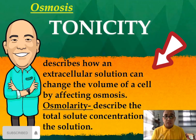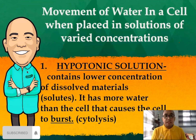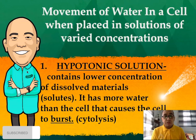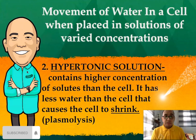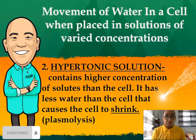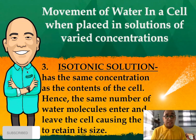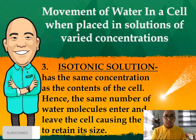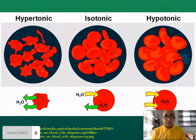Tonicity describes how an extracellular solution can change the volume of cells by affecting osmosis. Osmolarity describes the total solute concentration in a solution. Movement of water in solutions of varied concentrations is of three kinds: hypotonic solution contains a lower concentration of solutes with more water than the cell, causing the cell to burst (plasmolysis); hypertonic solution contains a higher concentration of solutes than the cell, causing the cell to shrink (plasmolysis); and isotonic solution has the same concentration as the cell contents, so the same number of water molecules enter and leave, causing the cell to retain its size.